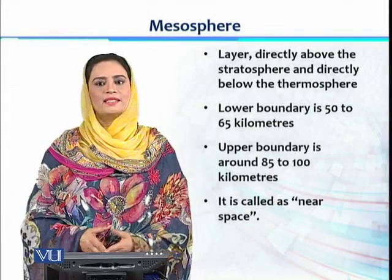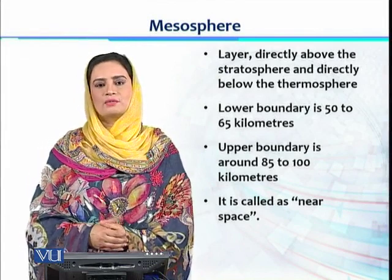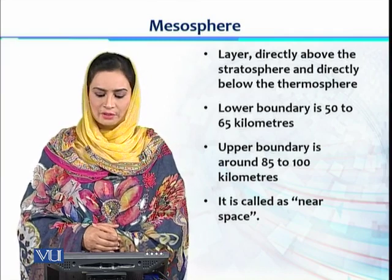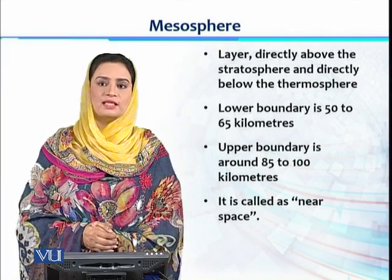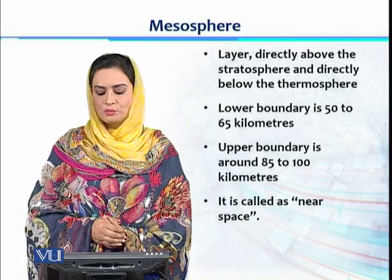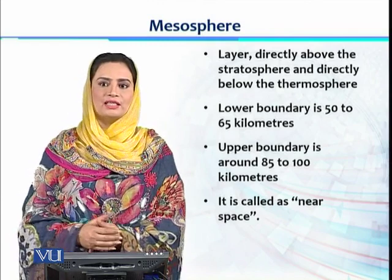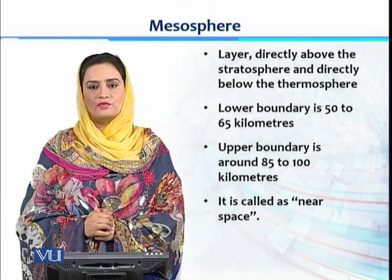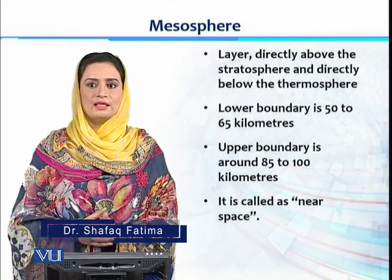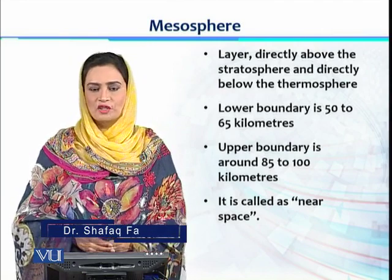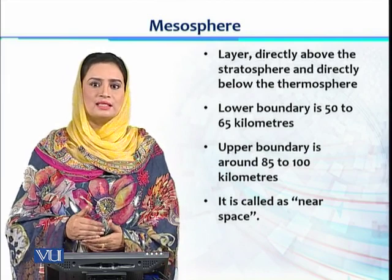The next layer present above the stratosphere is called the mesosphere. It is the layer above the stratosphere and below the thermosphere. Its lower boundary altitude is 50 to 65 km from the Earth's surface, and the upper boundary could be up to 85 to 100 km. At this height, we can say that our mesosphere is almost near space, and the atmospheric properties seen in stratosphere or troposphere are not found here.